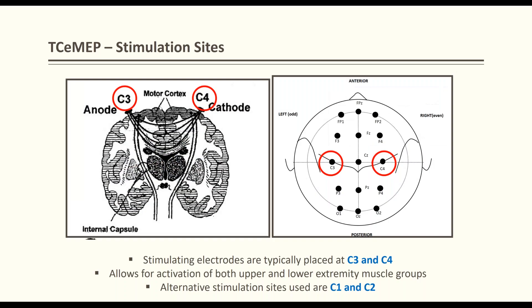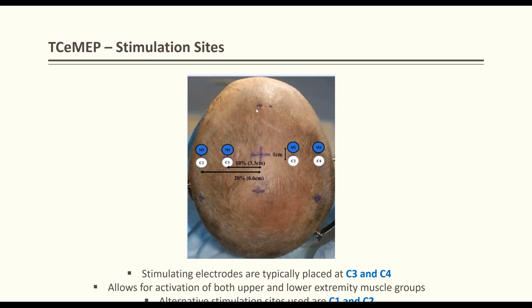When activating C3, C4, C1, or C2, current travels from cathode to anode, but the anode side is more active. CZ, C1, C2, C3, C4 are the most important stimulation sites. M1, M2, M3, M4, one-inch anterior C1/C2, C3/C1/CZ, and C2/CZ are all possible combinations from the literature to optimize responses.